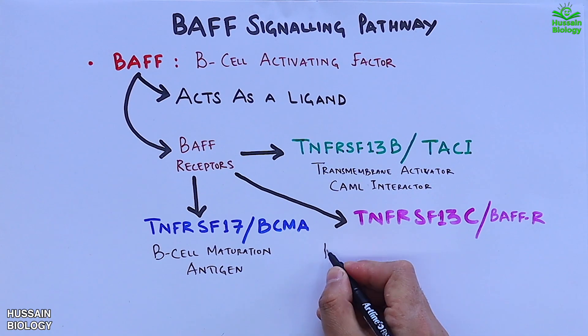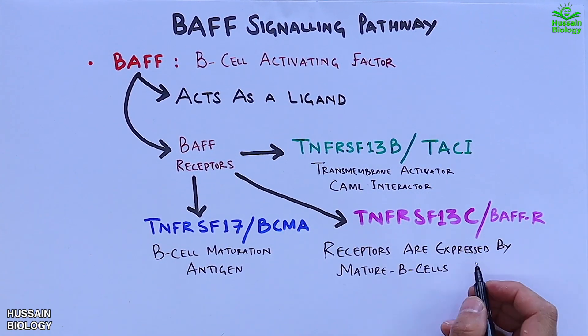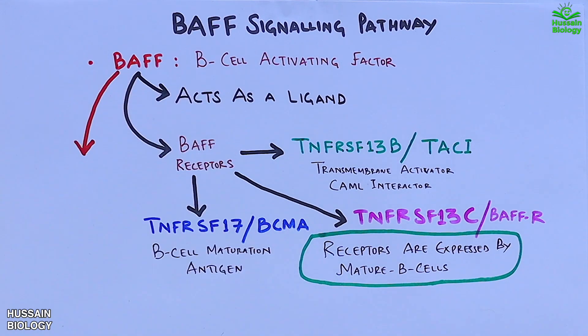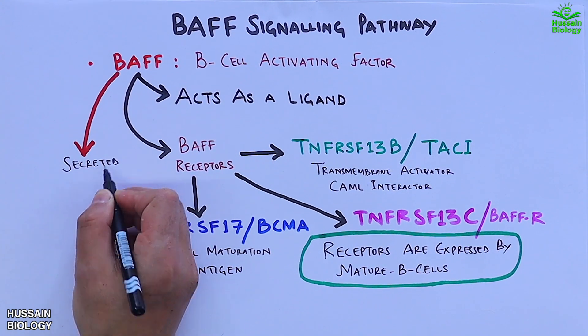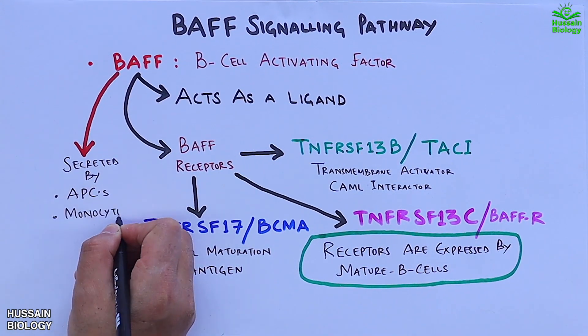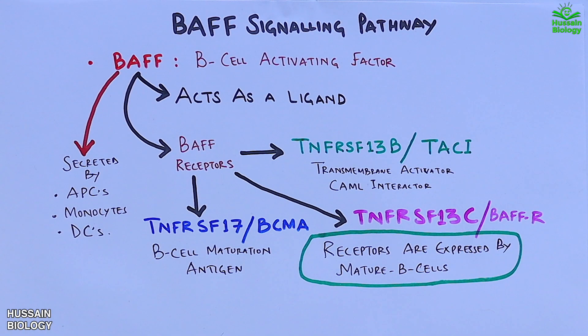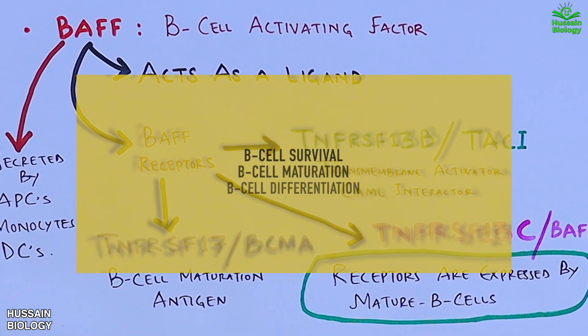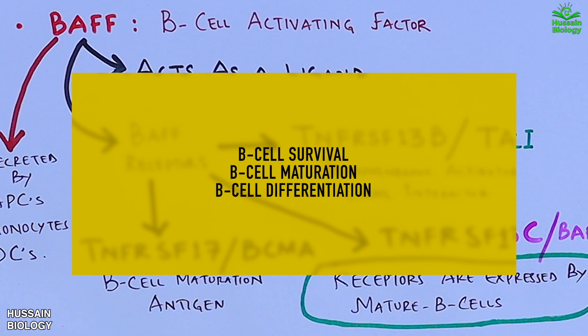All the receptors are expressed mostly by mature B cells, whereas BAFF is secreted by various cells which includes APCs, monocytes, and dendritic cells. Furthermore, the BAFF pathway regulates B cell survival, maturation, and differentiation. It helps in homeostasis and plays a role in the expression of certain B cell surface proteins such as CD21 and CD35.